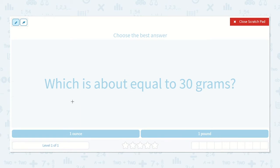Well, I know that one pound is about equal to 450 grams. So knowing that, I do not believe that one pound would be closer to 30 grams. I believe it would be one ounce that is closer to 30 grams because there are 16 ounces in a pound.